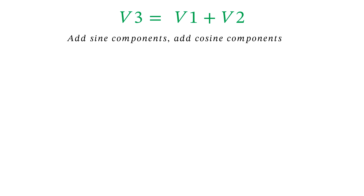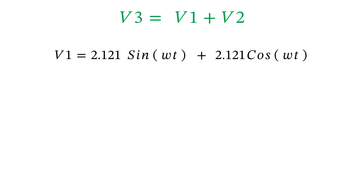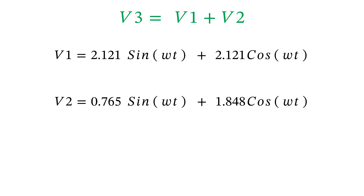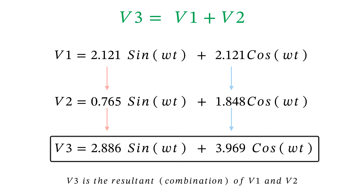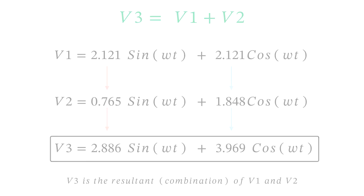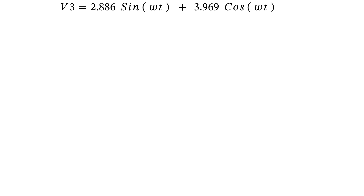v3 equals the sum of the other two voltages. We add the sine components and the cosine components and combine like terms. v1 = 2.121 sine(ωt) + 2.121 cos(ωt), and v2 = 0.765 sine(ωt) + 1.848 cos(ωt). Adding sine to sine and cosine to cosine gives v3 = 2.886 sine(ωt) + 3.969 cos(ωt). v3 is the resultant of the other two voltages.